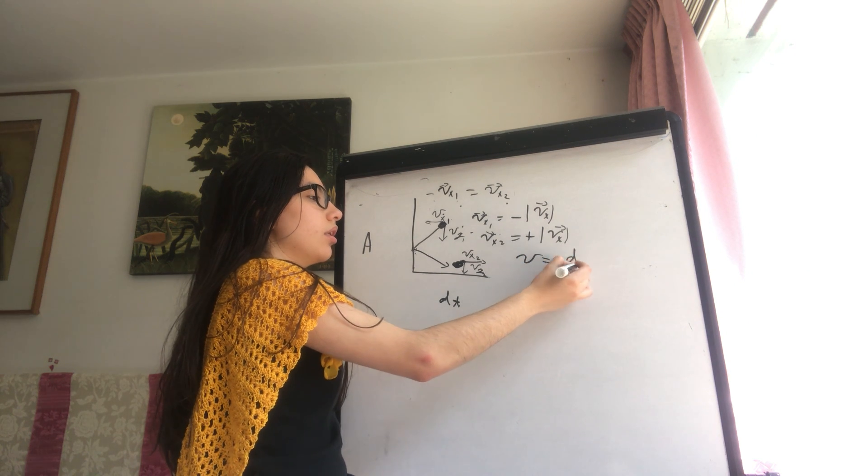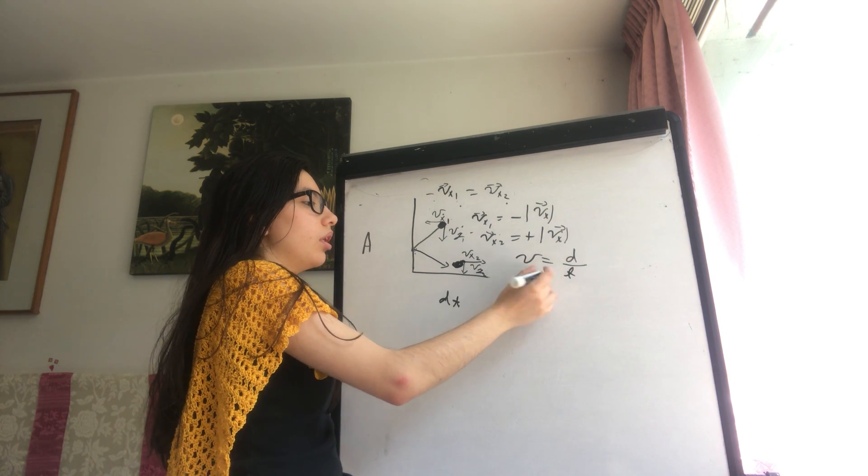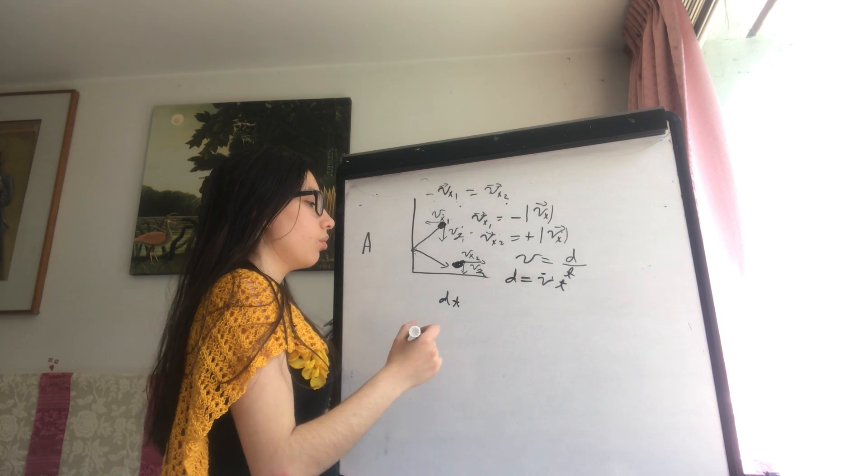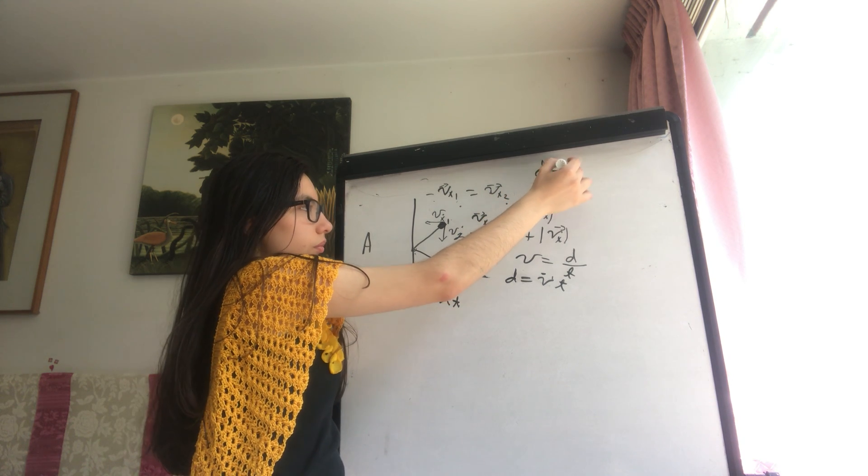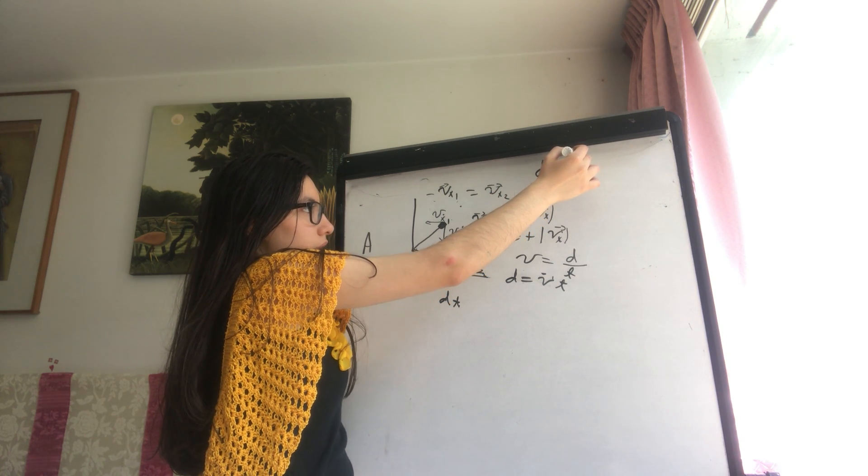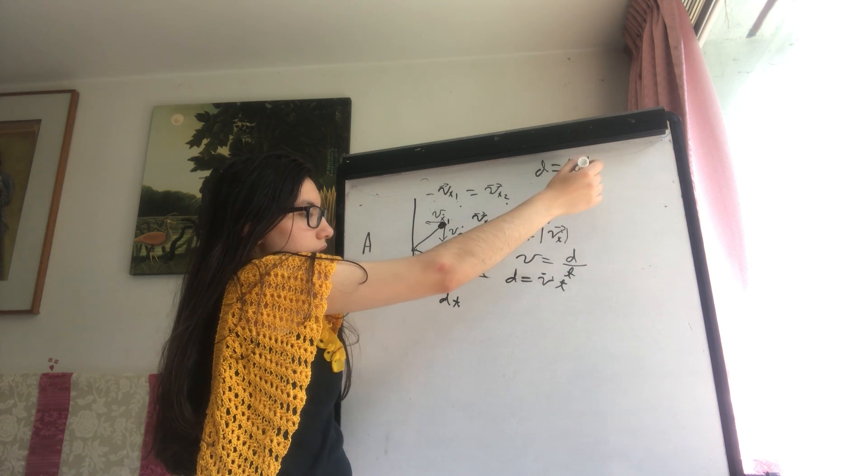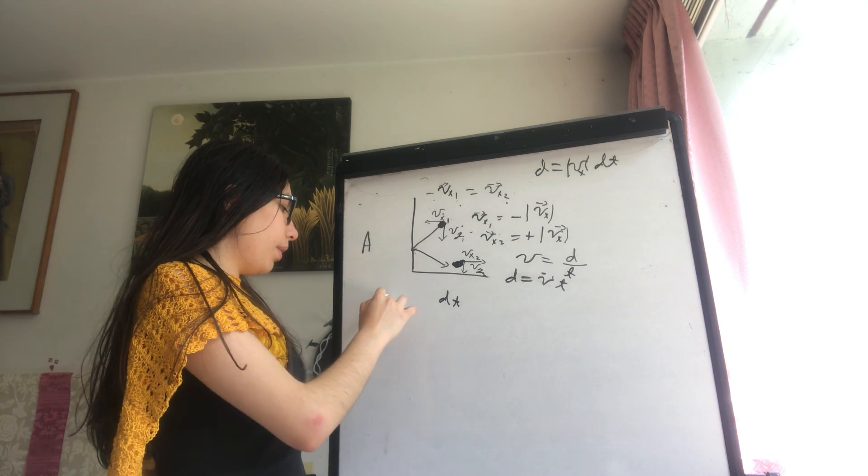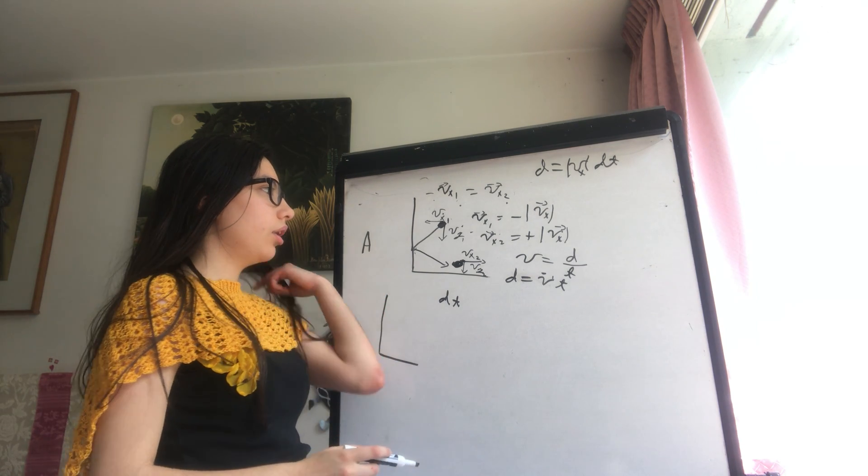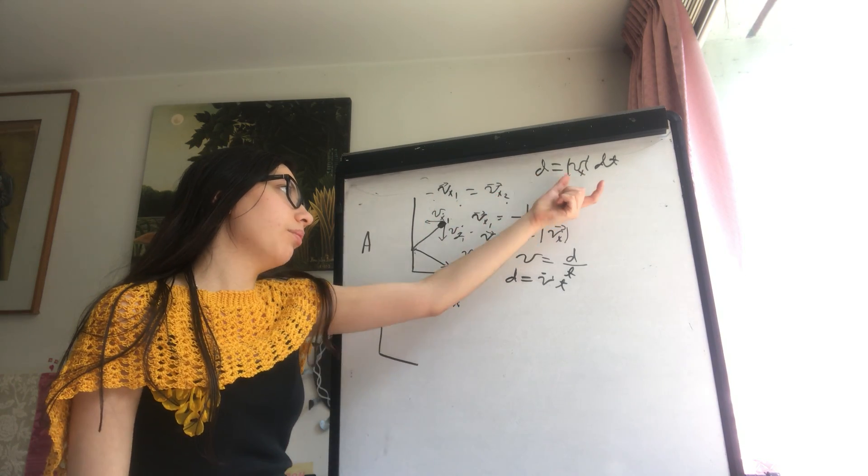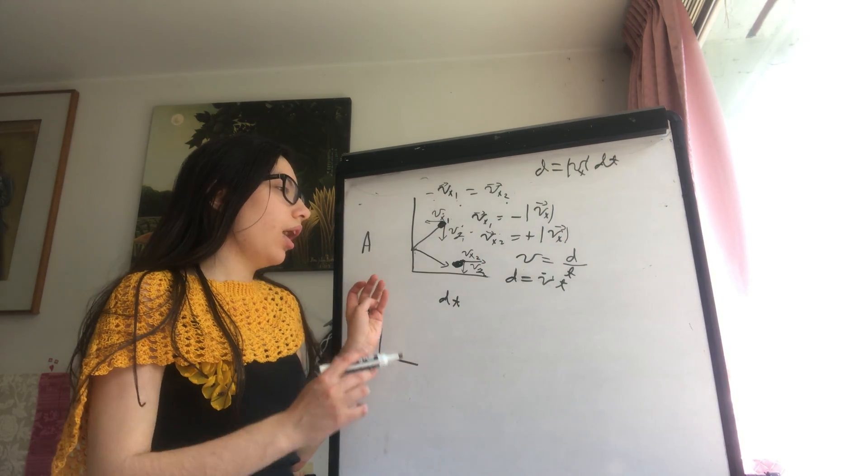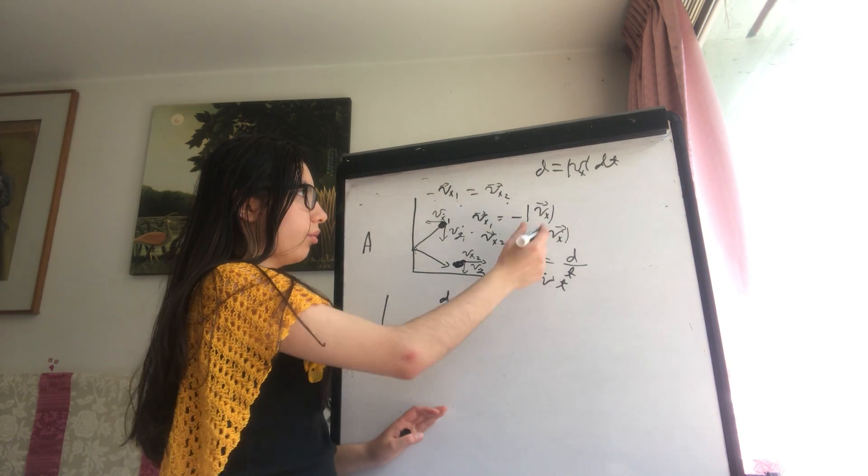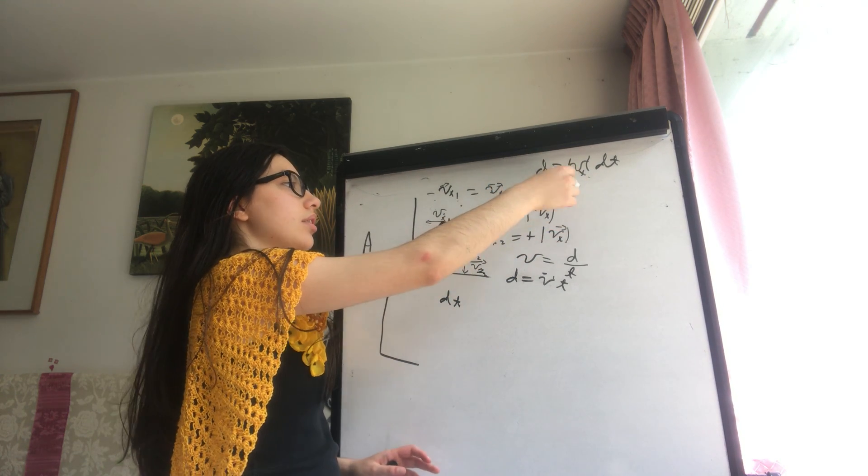Velocity equals distance over time, so distance equals velocity times time. The distance would be the absolute value of the velocity times dt. So all the particles that will collide on the wall at the end of the time interval dt have to be at a distance of Vx times dt.